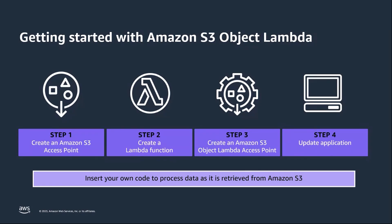First, you will create a standard S3 access point. Then, you create a Lambda function and tailor it to whatever data transformation suits your use case. After that, you will create an S3 Object Lambda access point — this is a new type of access point and it is the endpoint at which you will point your application. You configure that with a Lambda function and point it to an underlying bucket using your standard S3 access point. Now, when a request is made to the S3 Object Lambda access point, it invokes that Lambda function. The Lambda function pulls the data out of S3, modifies it according to the Lambda function you provided, and streams it back to the application, which means the processing of data happens in line with the request.